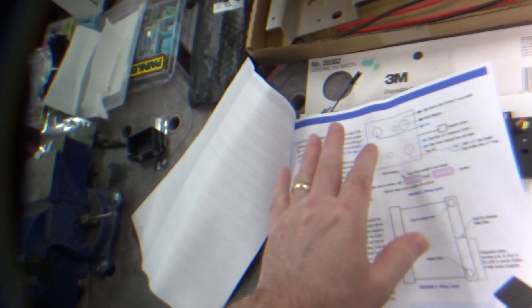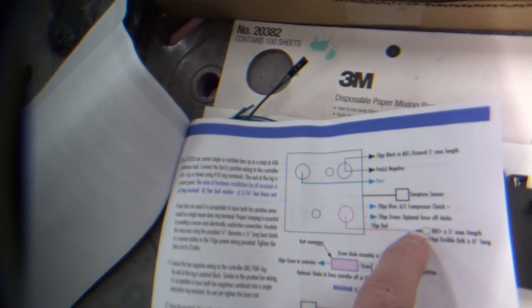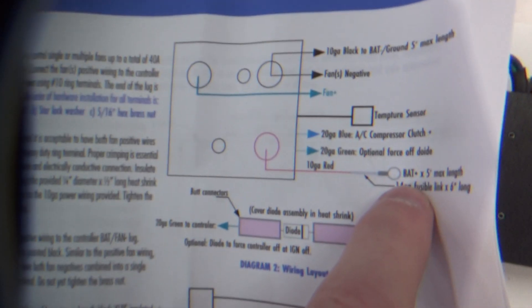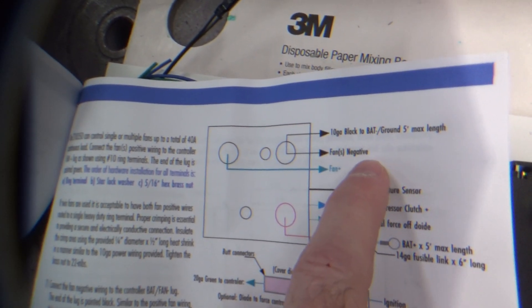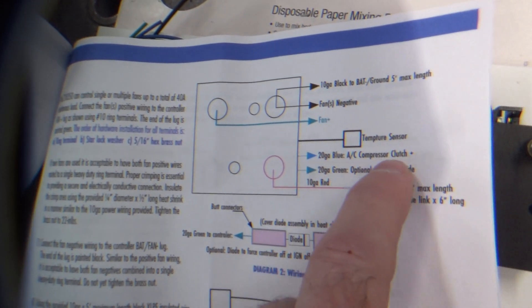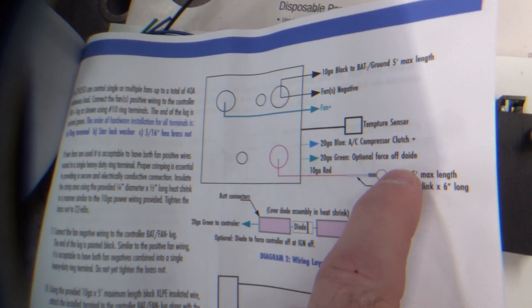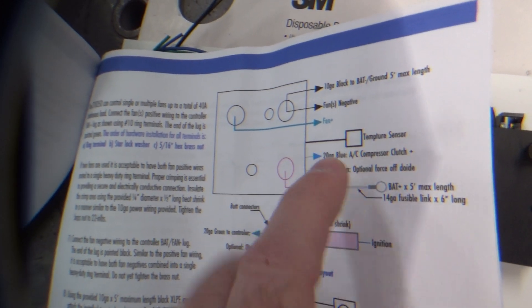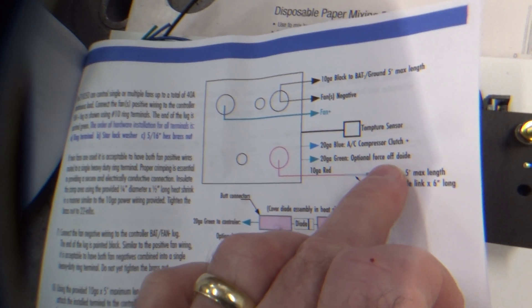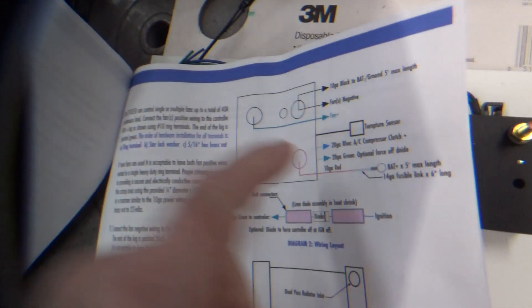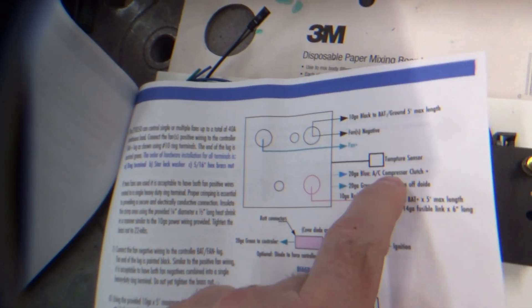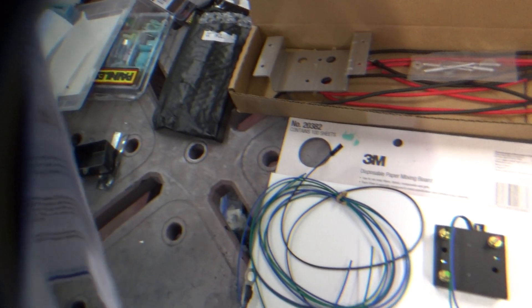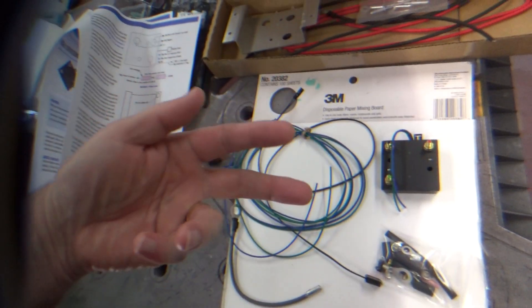So here's your wiring diagram. This is the battery connector, temperature sensor, and then you have the fan stuff going on here. Then you have the blue AC clutch to turn the thing on, and there's also a force off to have the fans turn off when you turn off the ignition.